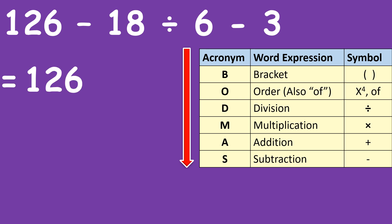So we have 126 minus 3 minus 3. How did we get that? Since we started with the division, 18 divided by 6 is 3 and that's why we have 126 minus 3 minus 3.